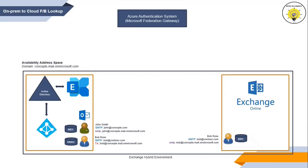Let's assume the on-premise Exchange server has an organization relationship. The availability service will check the organization relationship and look for the Application URI attribute set to outlook.com, which is the identifier for the Office 365 organization trust in Azure Authentication System. At this point, availability service has found how it can reach the Office 365 organization where Bob's mailbox is located. It will then request Azure Authentication System for a delegation token to communicate with Office 365, and Azure Authentication System will send that delegation token to the on-premise Exchange server.